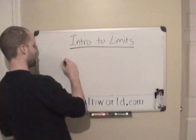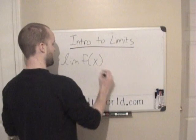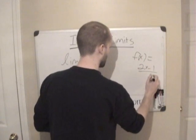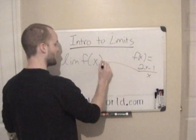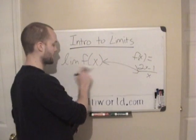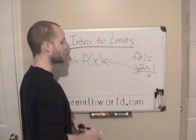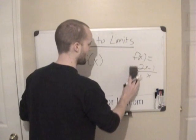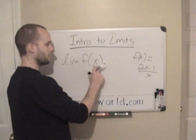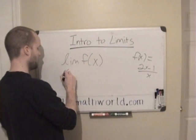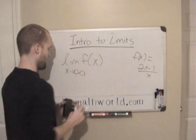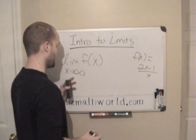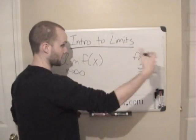The next function we're going to look at: find the limit of f of x when f of x equals 2x minus 1 over x. A lot of times you may just see the limit of 2x minus 1 over x — it doesn't really matter, but often the function is defined outside the limit. Here we're finding the limit as x approaches infinity, so as x gets bigger and bigger, what does the function get closer and closer to?